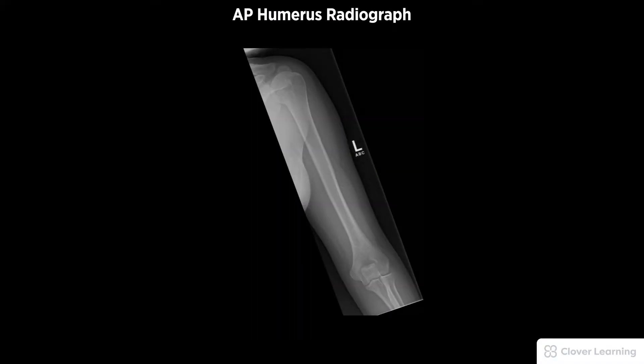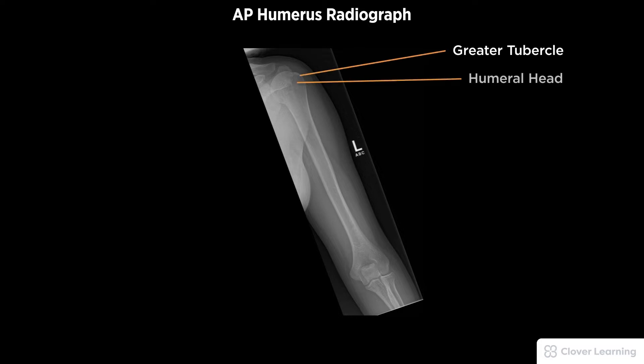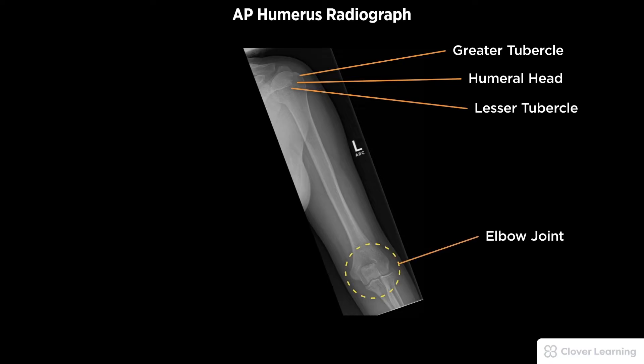A diagnostic AP Humerus radiograph must be free of motion and rotation. Demonstrated anatomy includes the humeral head and the greater tubercle in profile, with the outline of the lesser tubercle. Both the elbow and shoulder joints are visible with proper visualization of bony detail.